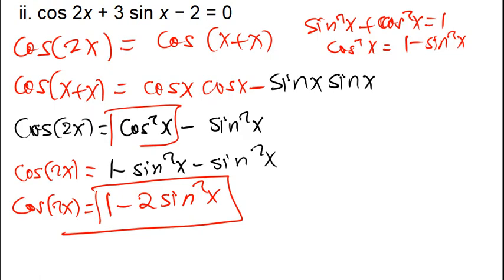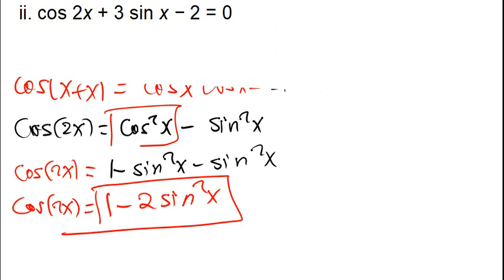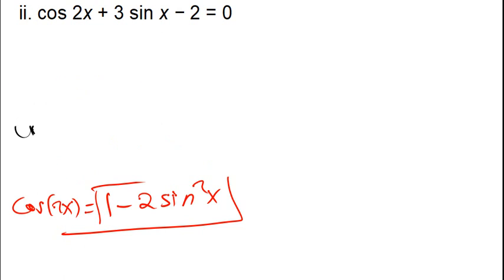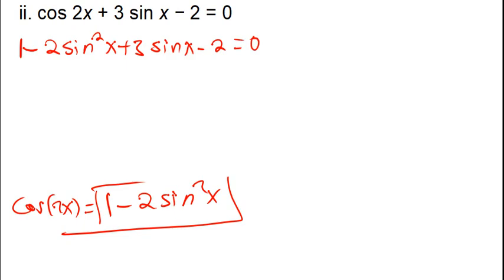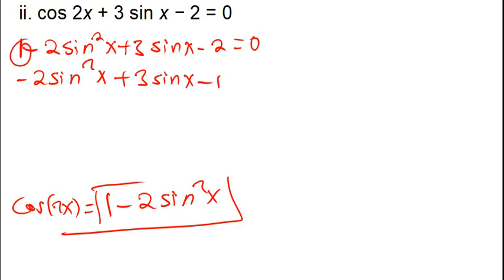I wanted to show where this identity comes from. Now I'll replace cos2x with 1 minus 2sin²x in the equation: 1 minus 2sin²x + 3sinx minus 2 = 0. Combining 1 minus 2 gives negative 1, so I have negative 2sin²x + 3sinx minus 1 = 0.